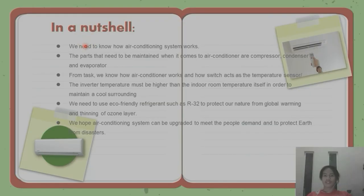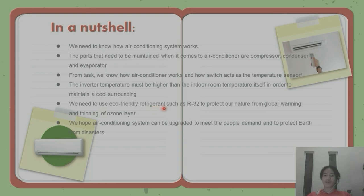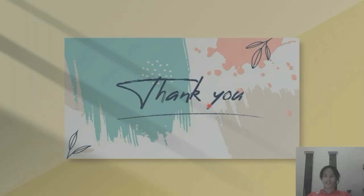To conclude, from our assigned task we can see that we need to know how an air conditioning system works. Key components to maintain include the compressor, condenser, and evaporator. We also learned how the switch acts as a temperature sensor, and how the inverter temperature must be higher than the indoor room temperature to maintain a cool surrounding. We need to use eco-friendly refrigerant such as R32 instead of R134a to protect the environment from global warming and thinning of the ozone layer. Lastly, we hope air conditioning systems can be upgraded to meet people's demands and protect the Earth from climate disasters. Thank you.